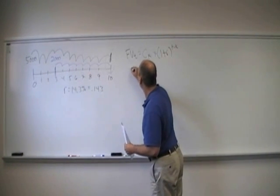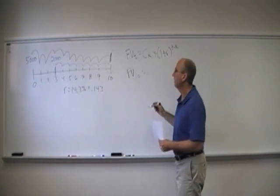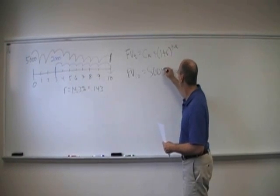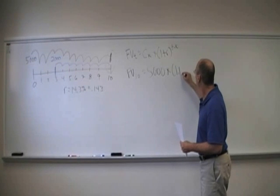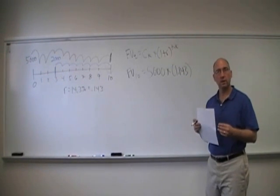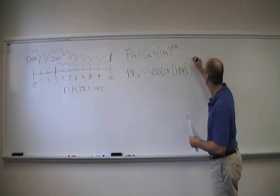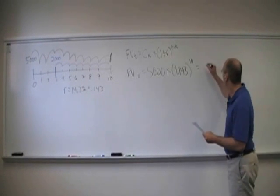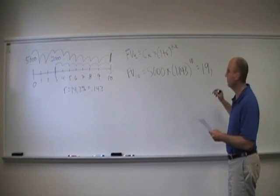So the $5,000, the future value of the $5,000 at time 10 is equal to $5,000 times 1.143, and how many years is it going to grow for? 10. And that is equal to $19,029.72.